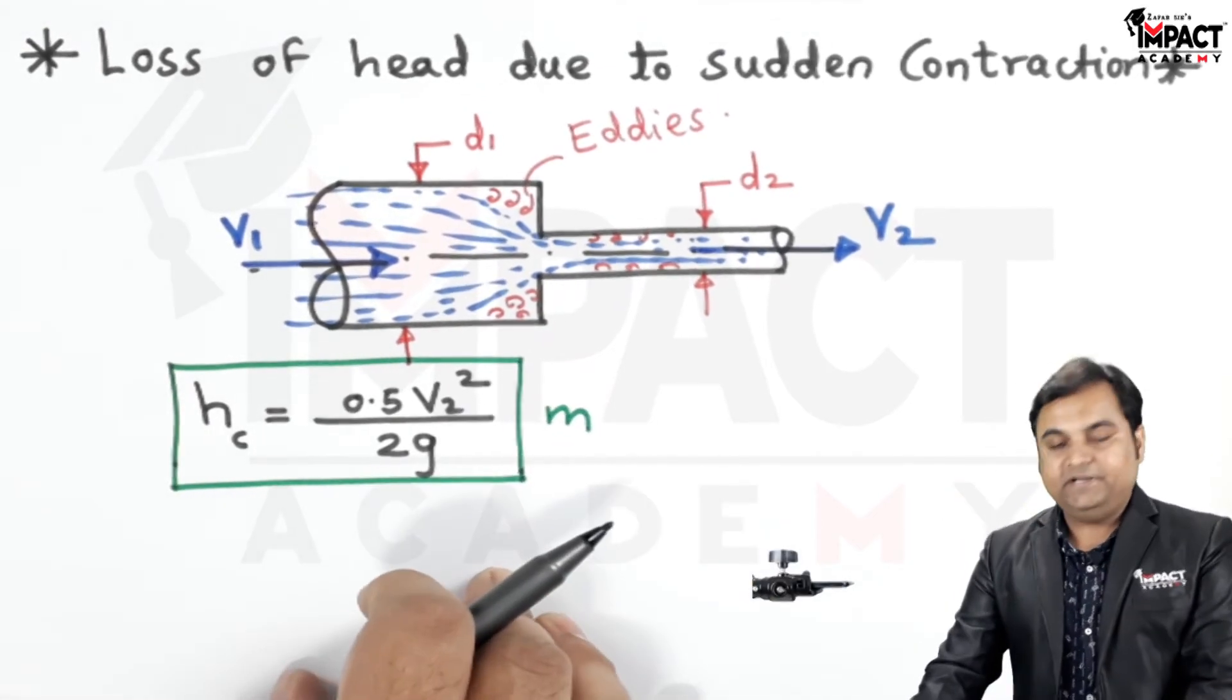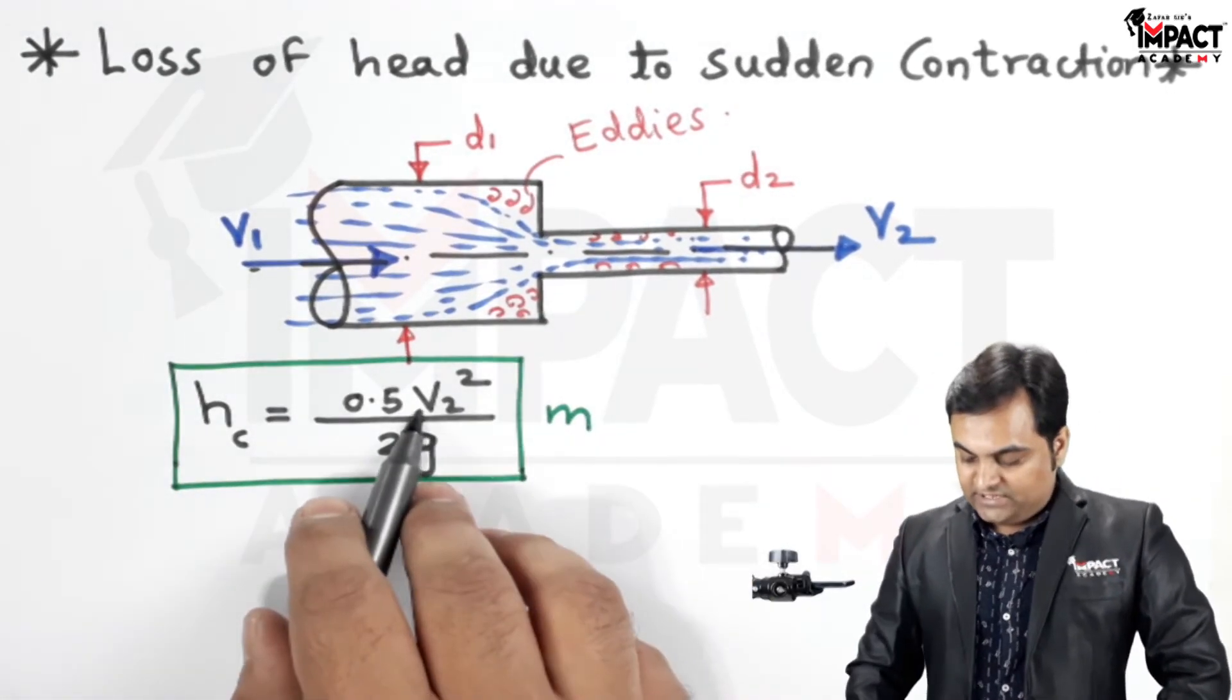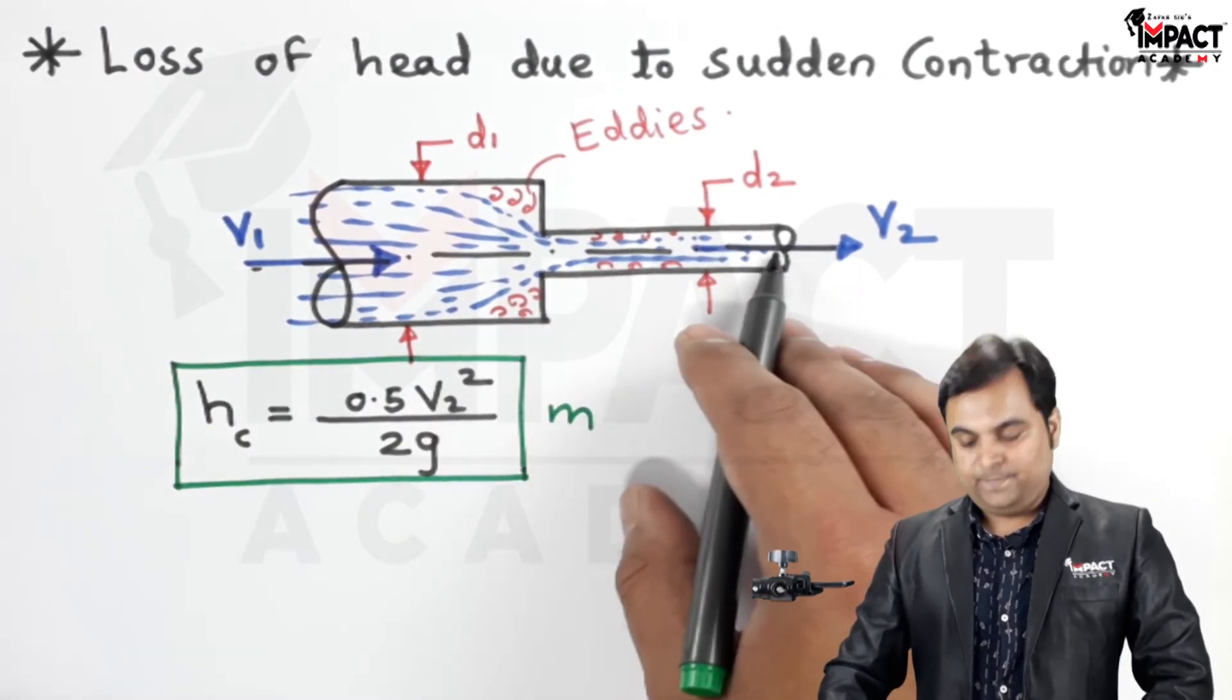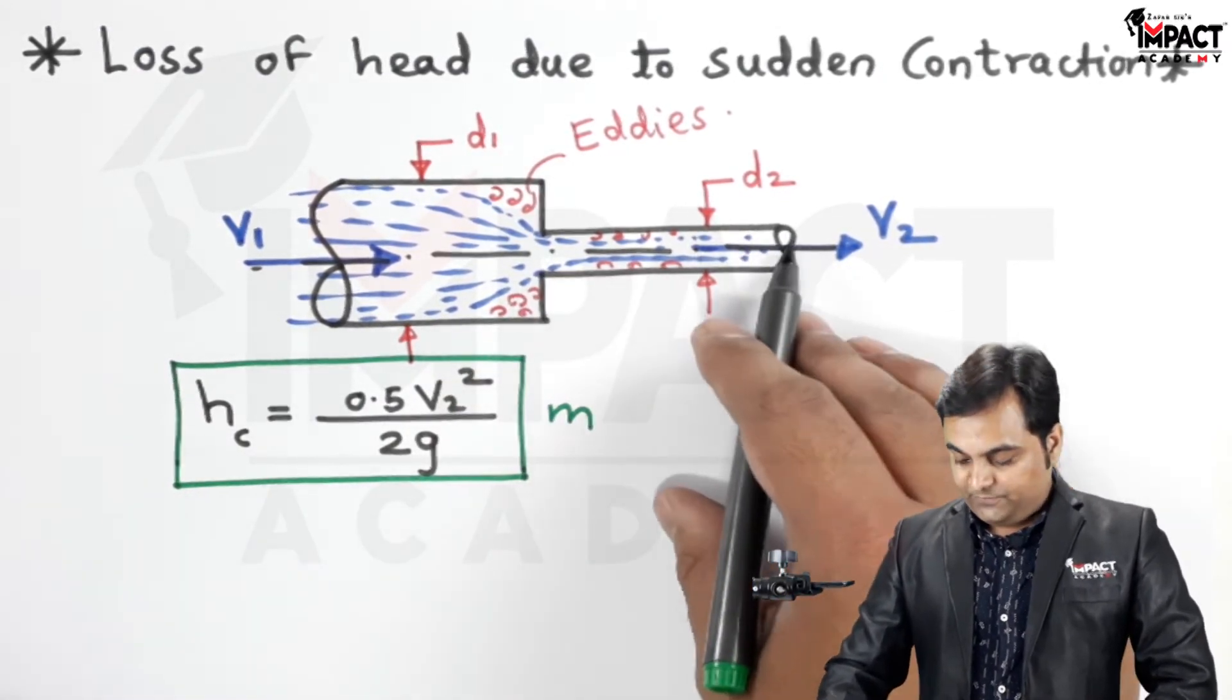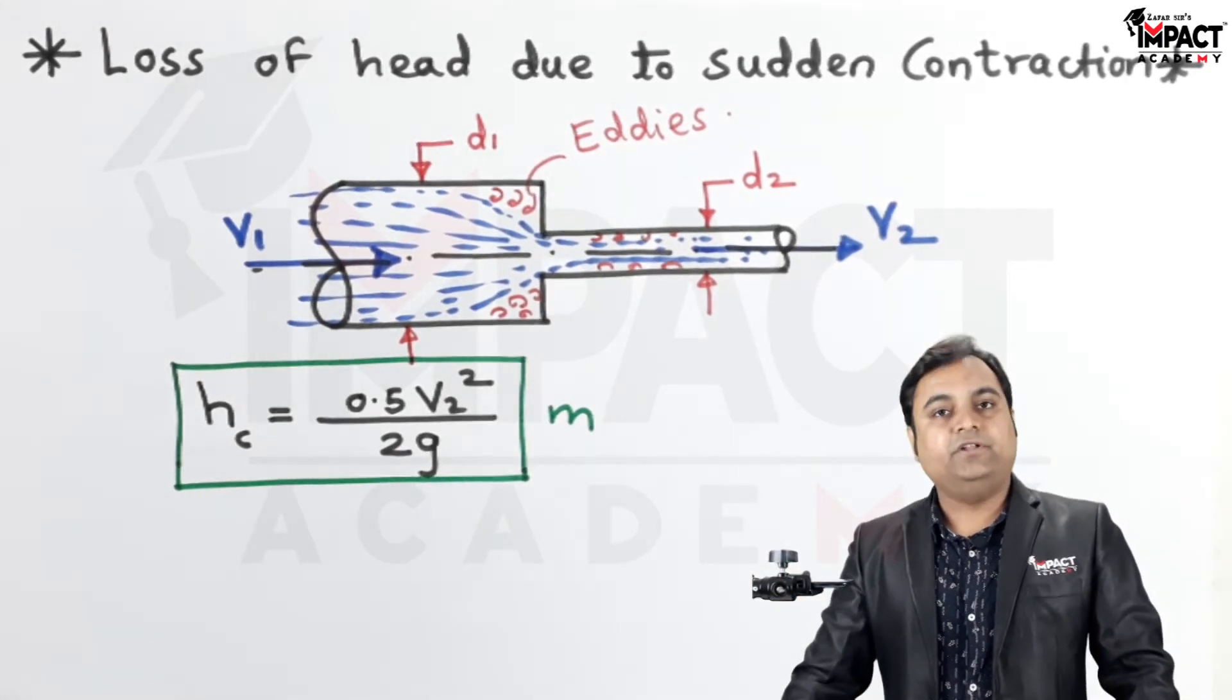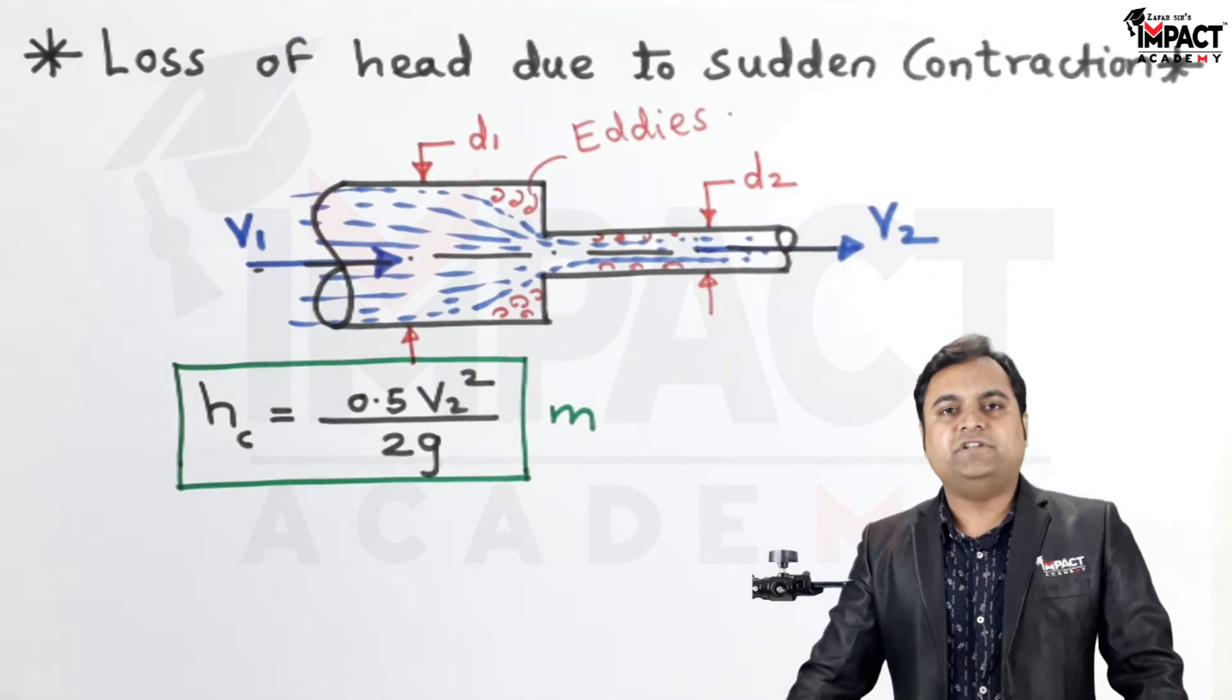The unit will be in terms of meter. V2 is the velocity of the fluid in the second pipe where the diameter has been reduced, and this is the formula to calculate the loss of head due to sudden contraction, also called as the minor loss.